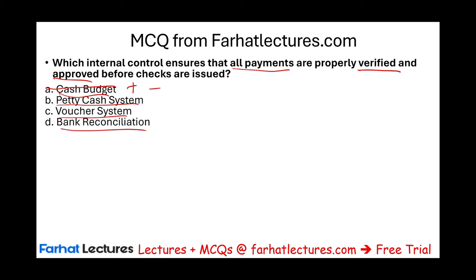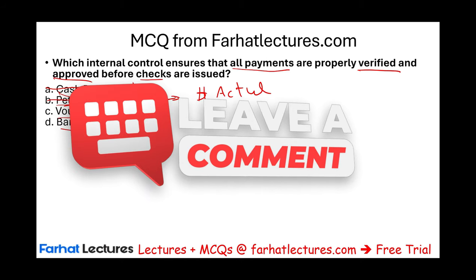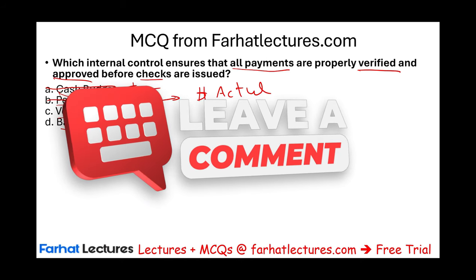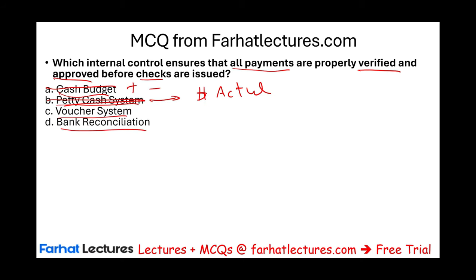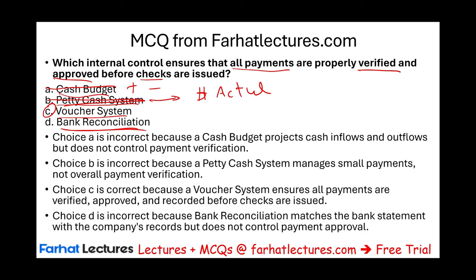A petty cash system involves making payments with actual cash, not checks, so B is out. The voucher system — option C — is the correct answer. It makes sure all payments have been verified and approved through a series of steps supported by specific documentation. Bank reconciliation is an excellent internal control tool, but it does not serve the purpose of verifying and approving the check payment system.